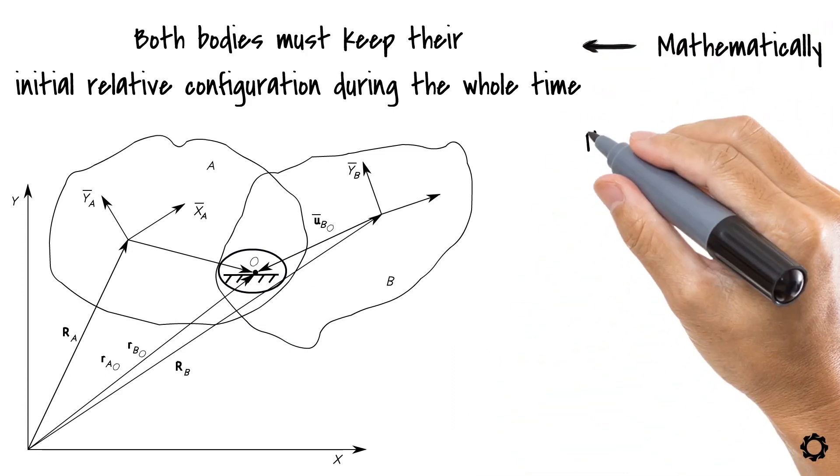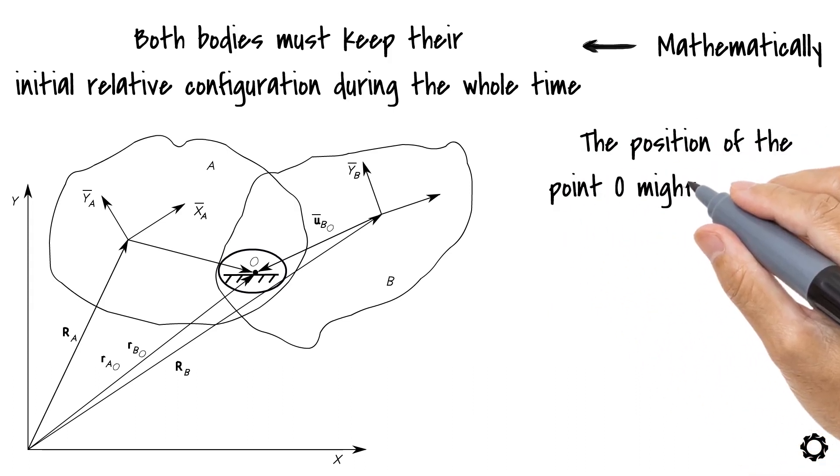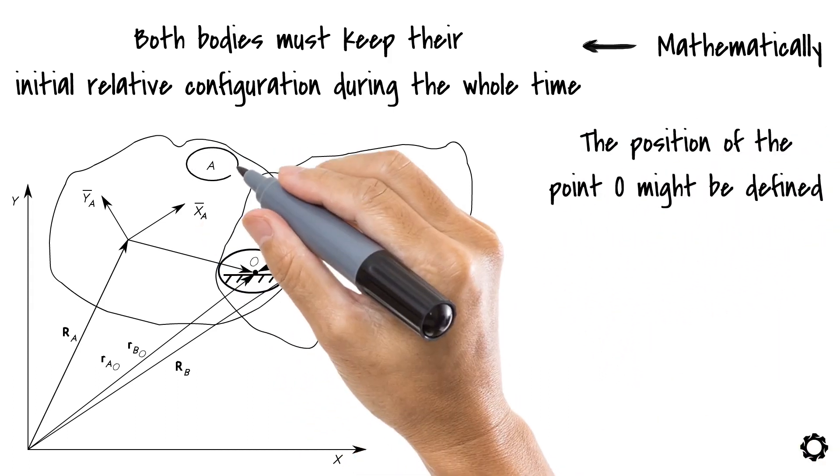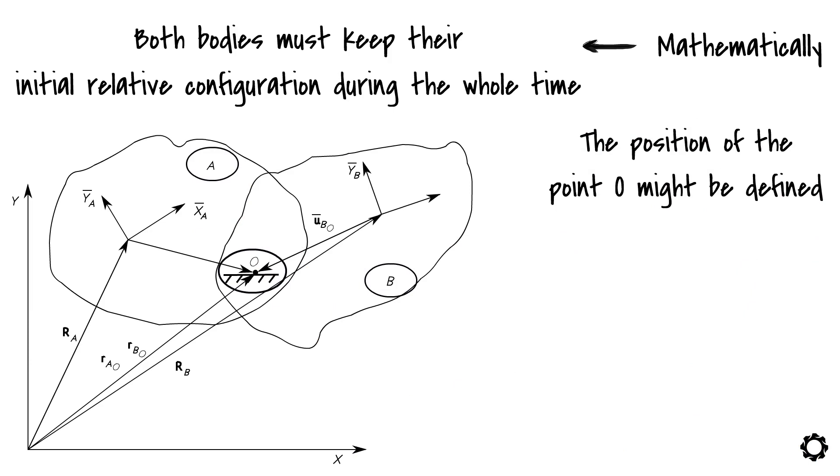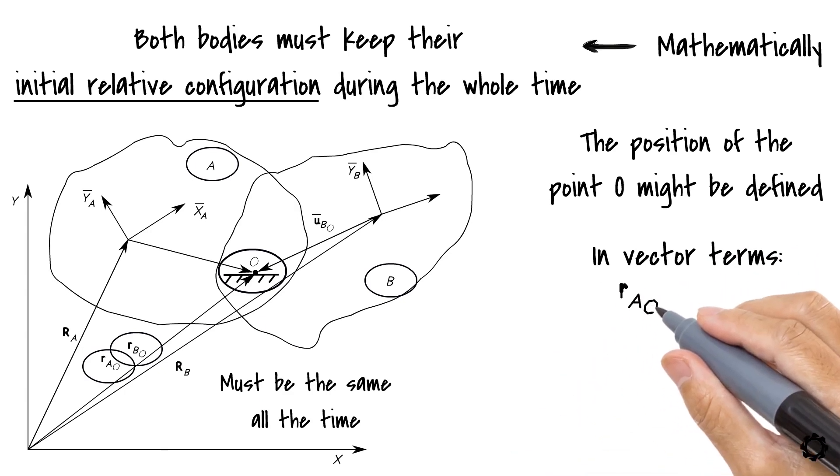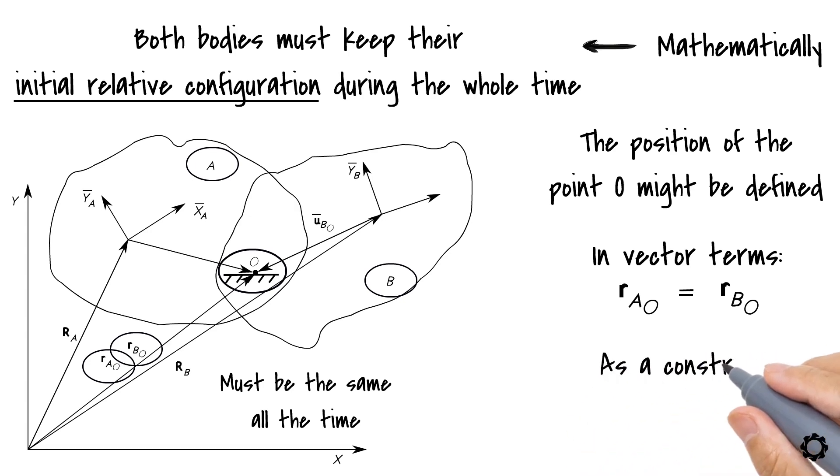We see that the position of the point O might be defined using body A or body B. If the two-body system must keep the initial configuration, it means that the position vector of point O measured via bodies A and B must be the same all the time. In vector terms, that is, RaO equals RbO. And this, represented as a constraint, needs to be rearranged to C is RaO minus RbO equals 0.